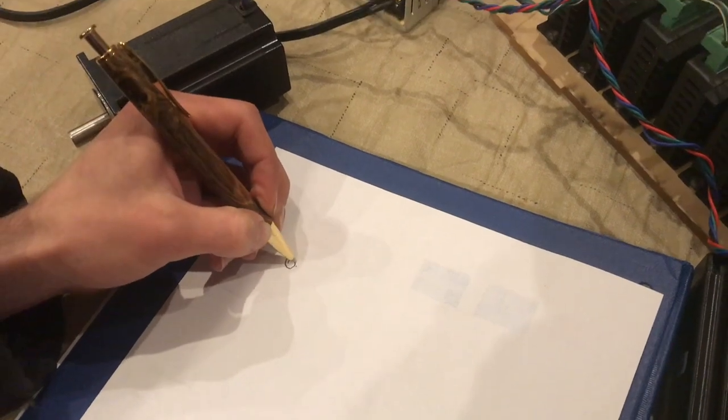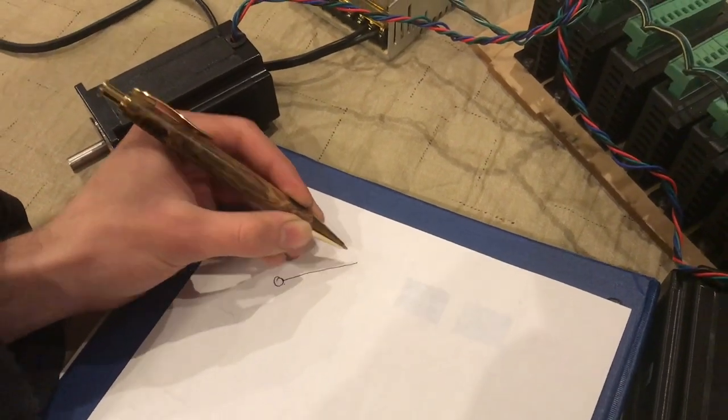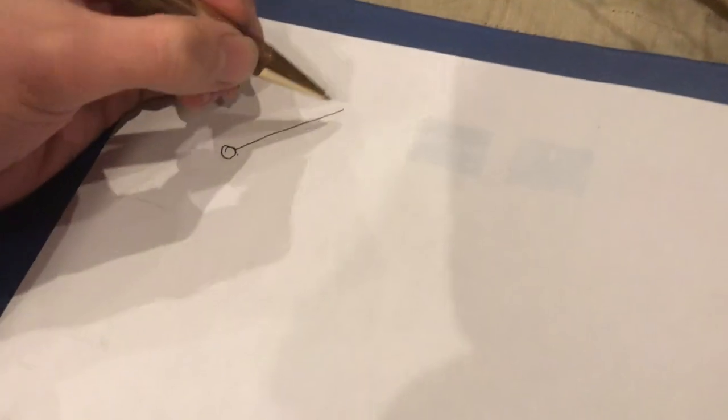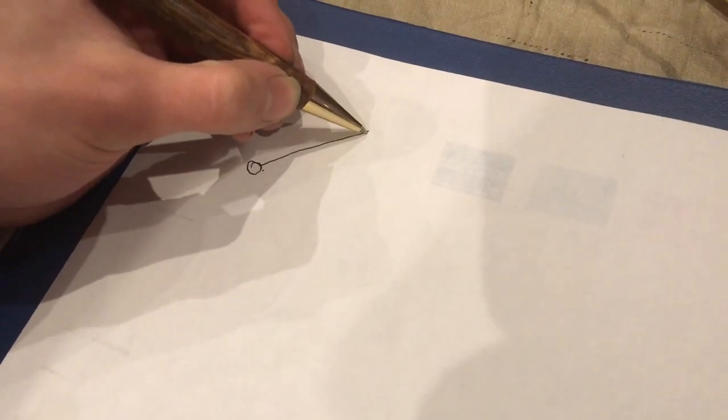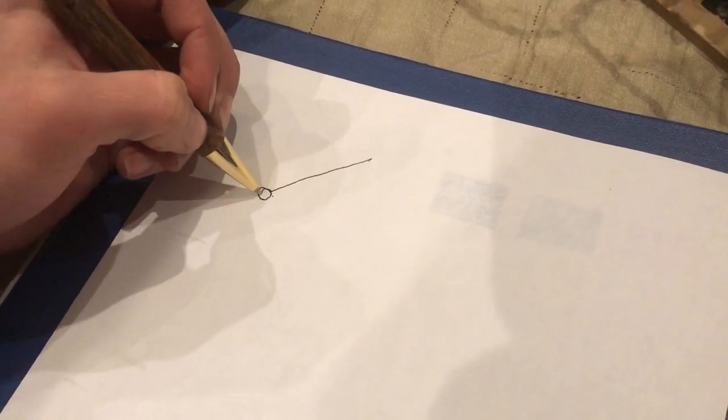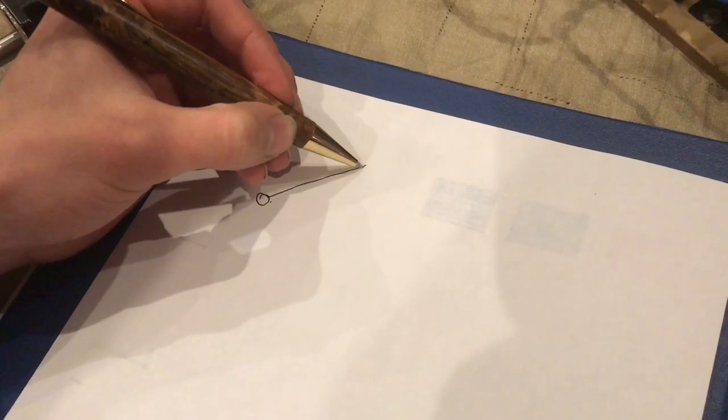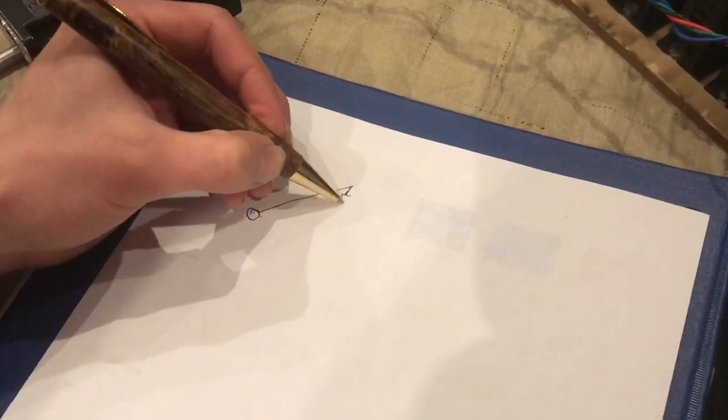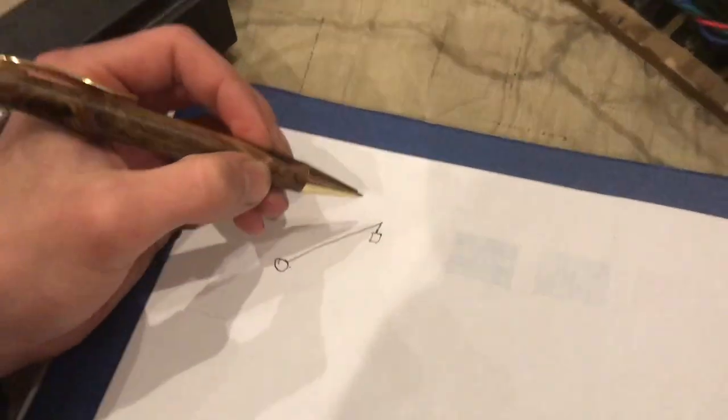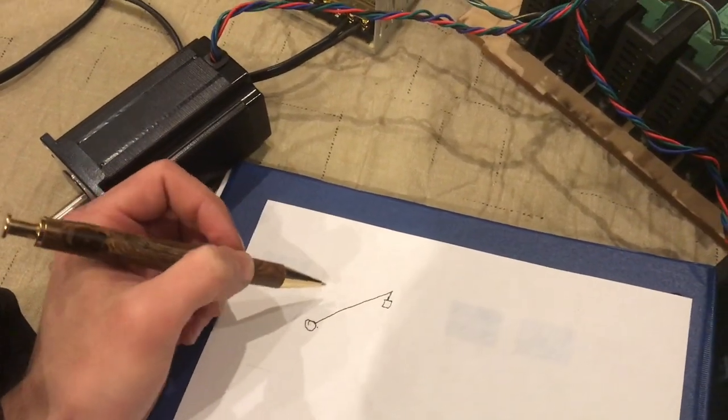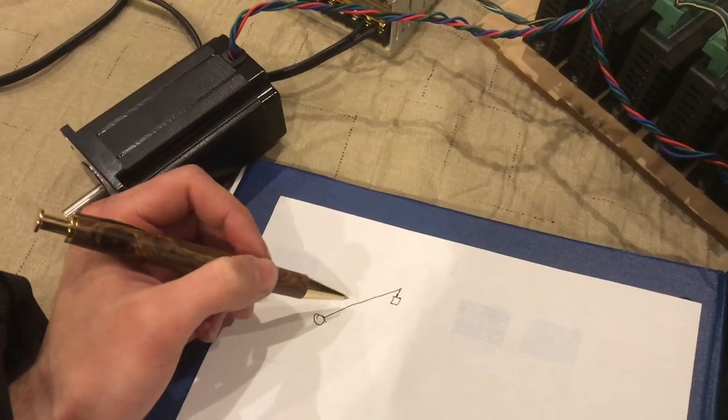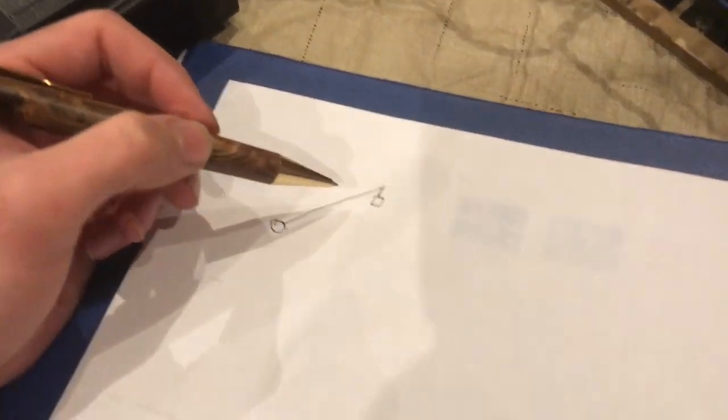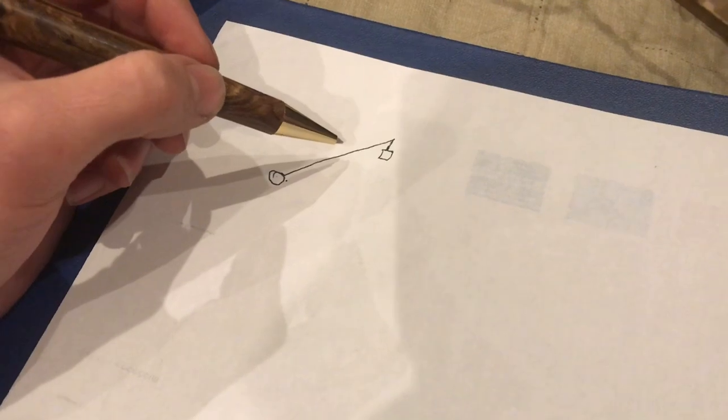So I'm just gonna represent this arm as a line because I'm not really sure what it's gonna be built out of yet. This is like the motor, the pivot point, and at the end there will be a payload or a weight of some kind that will be lifting.